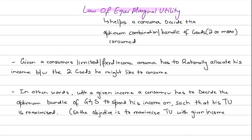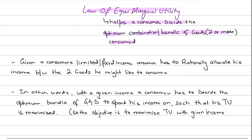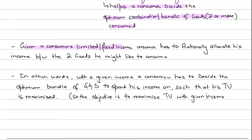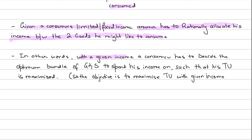The equi-marginal utility principle helps the consumer decide the optimum combination or bundle of two goods, or more than two goods consumed. The objective of the equi-marginal principle is to help the consumer decide the optimum combination or the optimum bundle of goods — that is the objective of the equi-marginal principle.